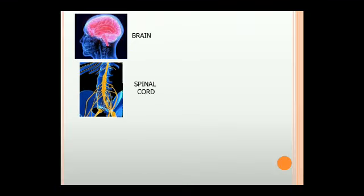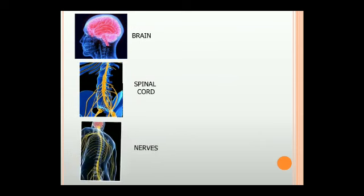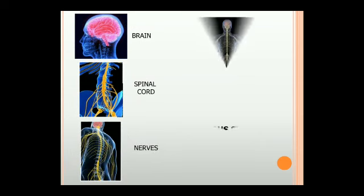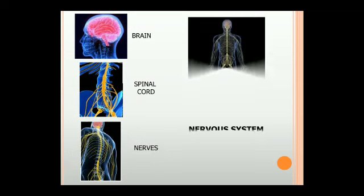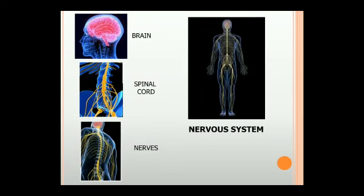The brain, spinal cord, and nerves make up our nervous system. Our nervous system is the control center of our body.